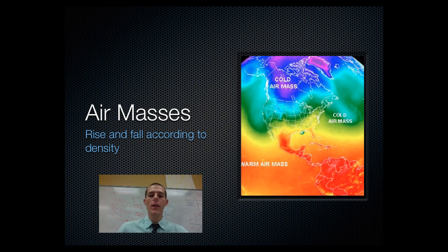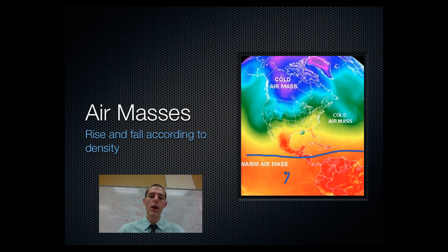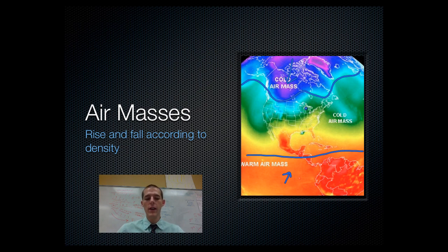Air masses rise and fall according to density. When things heat up they become less dense, and when they cool down they become more dense — same thing happens with air. When a mass of air gets warm, it's generally going to rise up. When it gets cold, it's generally going to sink down. So warm air masses found along the equator are generally rising from the surface of the earth up into the atmosphere, while cold air masses around the North Pole are very dense and generally sinking from the atmosphere down towards the surface of the earth.